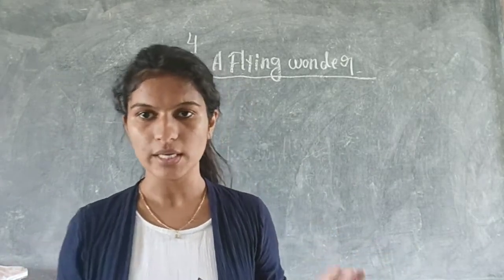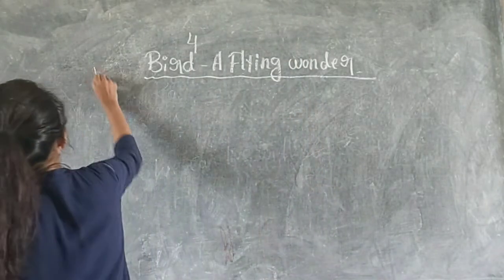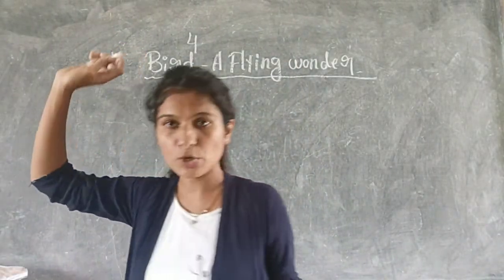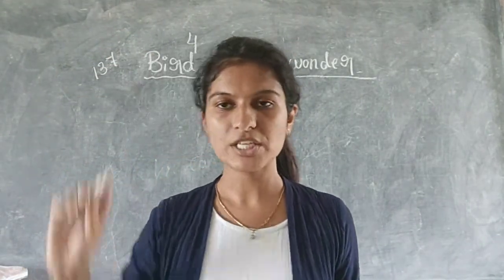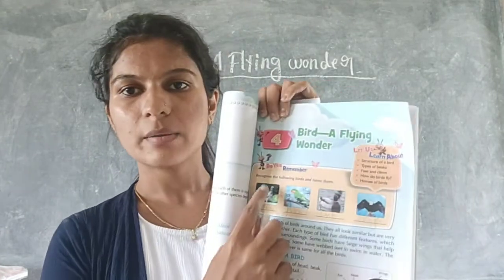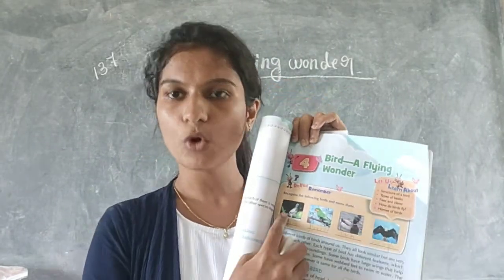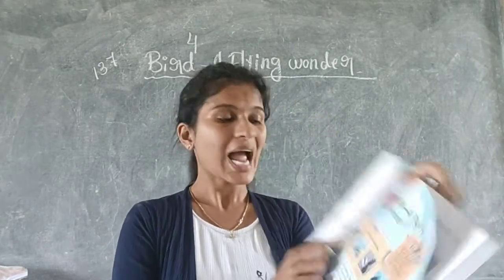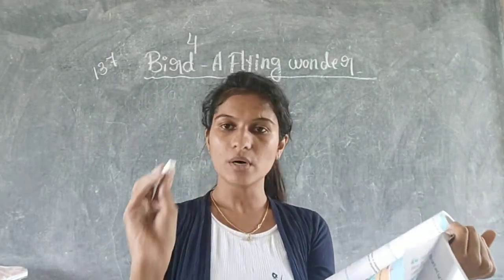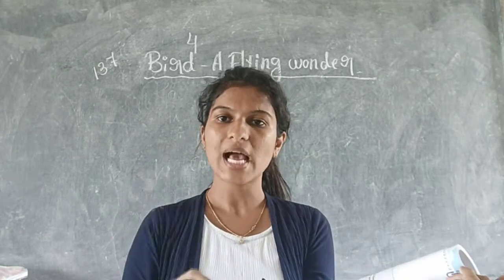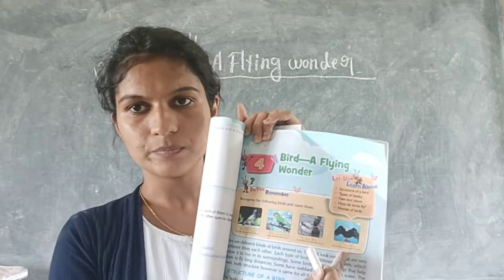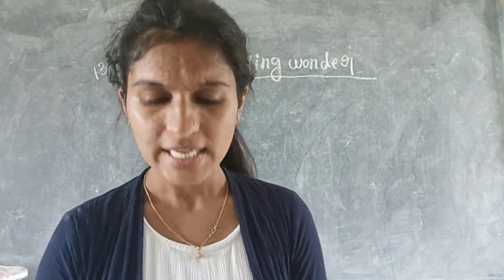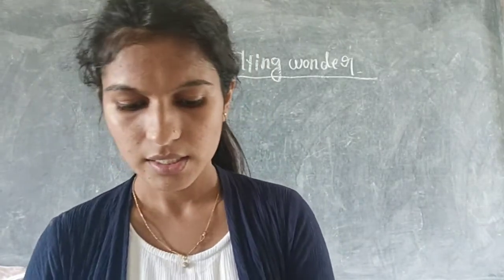First, open page number 137 and take a pencil in your hand, because now we are going to recognize some of the birds given on that page. They have given four pictures and they have asked you to recognize the following birds and name them. You have to recognize those pictures and write their names below.